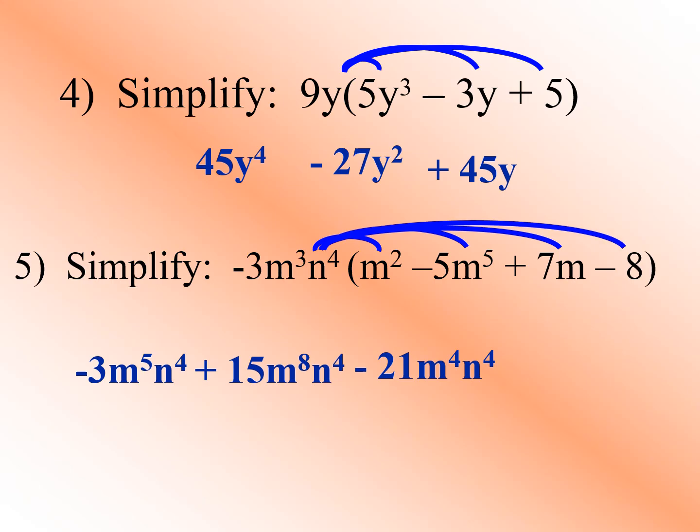The last one: multiply negative 3m³n⁴ by negative 8. Negative 3 times negative 8 gives us positive 24. Since negative 8 has no variables, just copy m³ and n⁴. So the final answer is negative 3m⁵n⁴ plus 15m⁸n⁴ minus 21m⁴n⁴ plus 24m³n⁴.